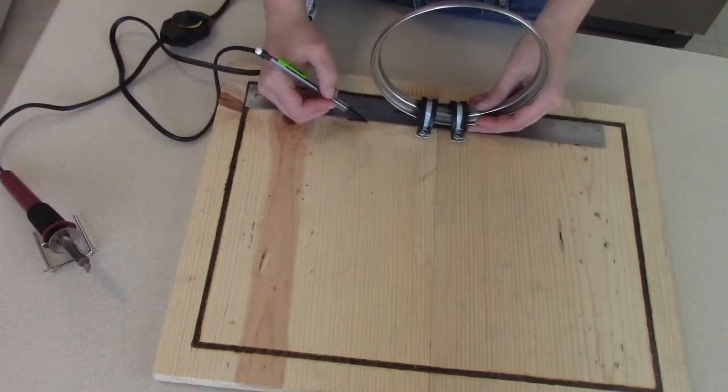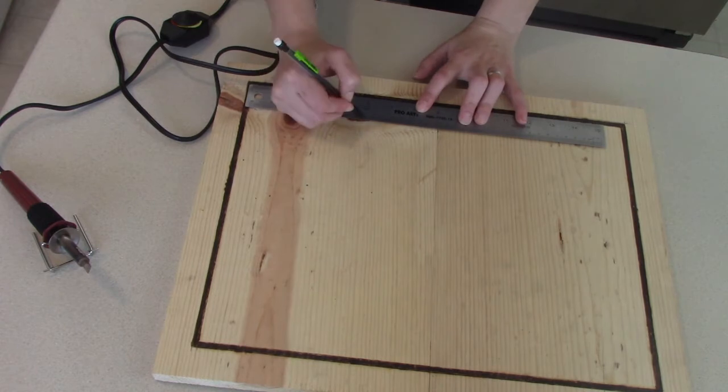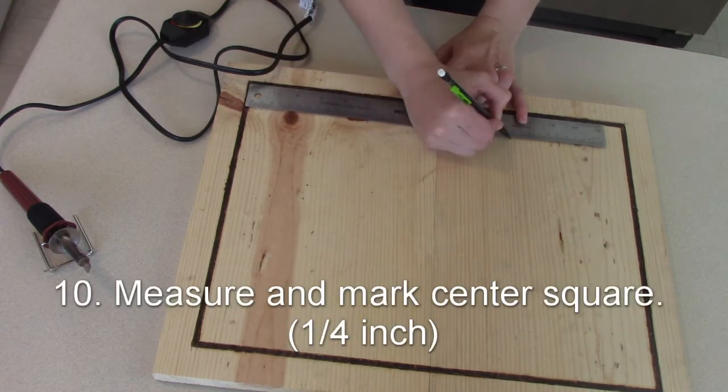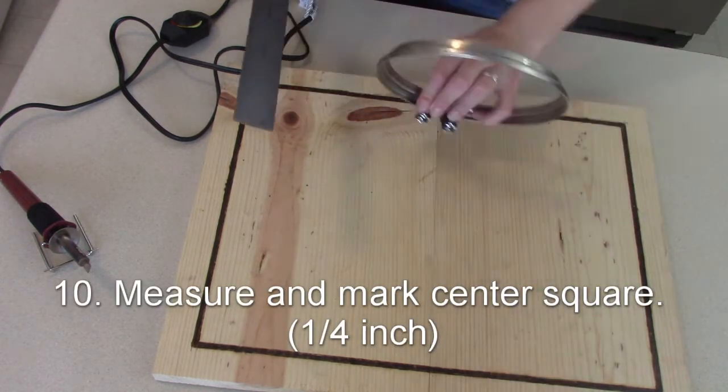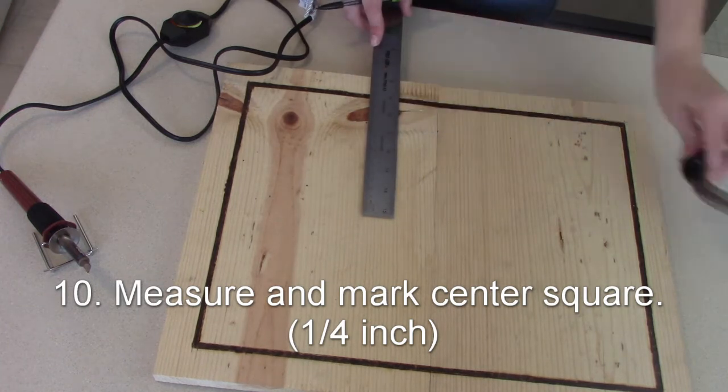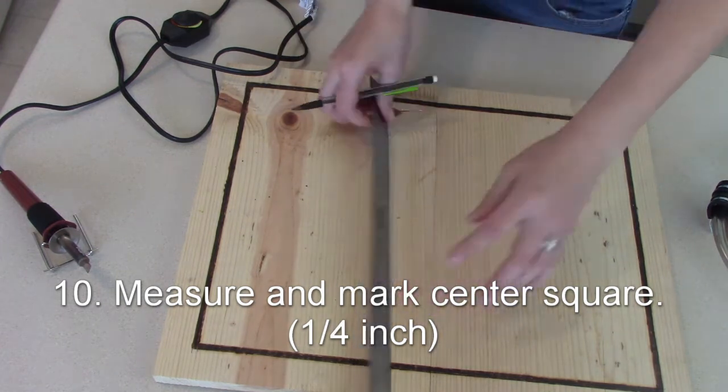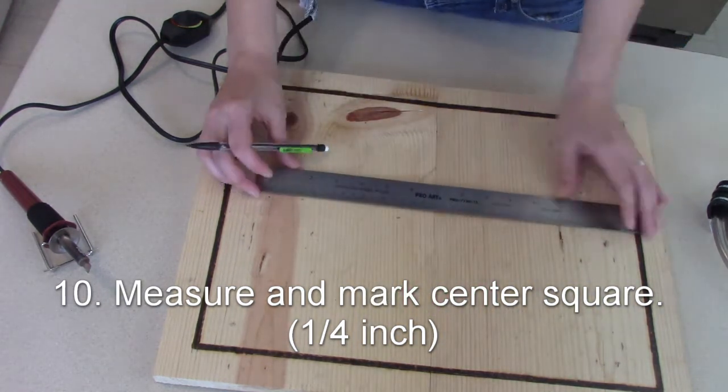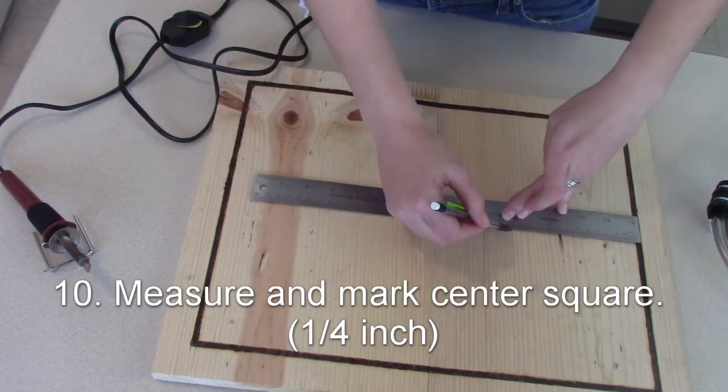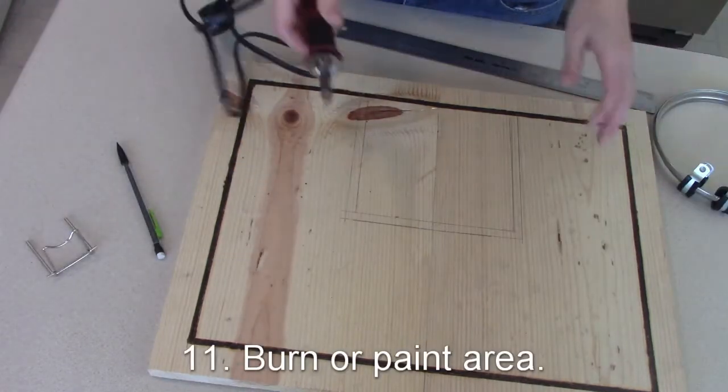Then I measured a square for the center square and it was about six inches by six inches with a quarter inch for the burnt area. So after I burnt that area I spray painted the rim orange.